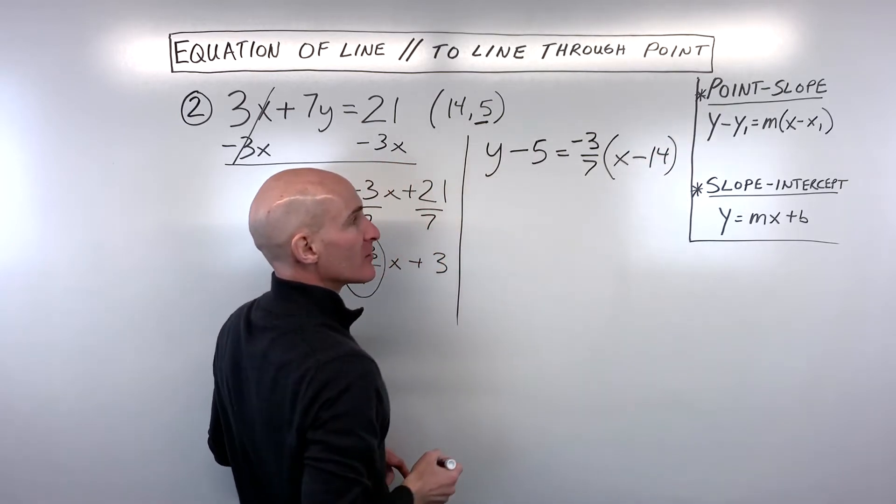So over here, we've got y minus the y-coordinate of the point that it goes through equals the slope, which is negative 3 7ths times x minus the x-coordinate of the point that the line goes through. So we've got our equation, but let's take it one step further and put it into the slope-intercept form by solving for y.